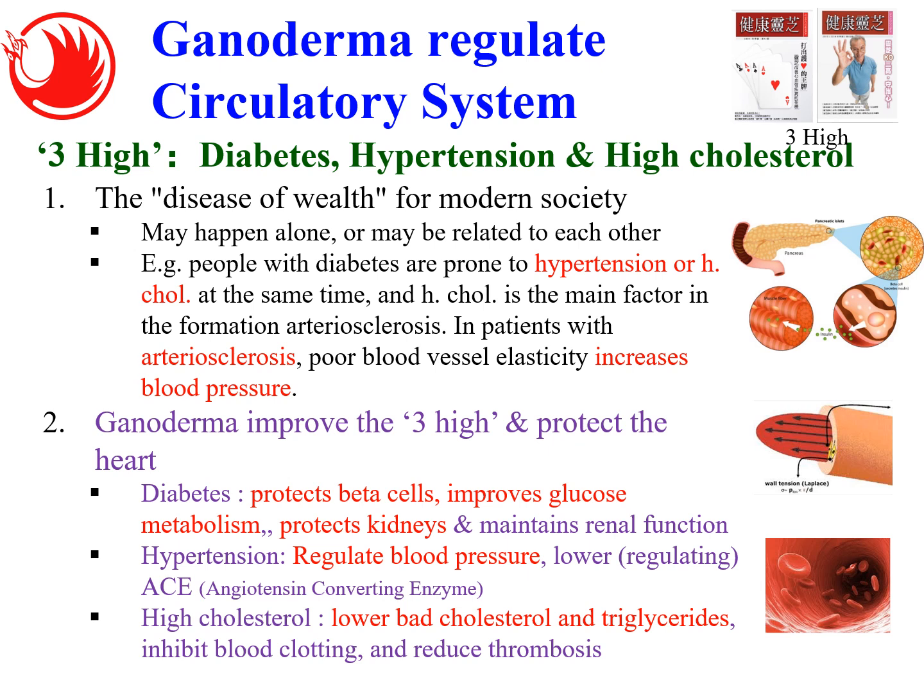Number two: Ganoderma regulates the regulatory system — what we call the three highs: high blood sugar (anti-diabetic), high cholesterol (lipid regulation), and hypertension. These three highs are diseases of the wealth of modern society and may happen together, creating a high risk of heart attack and even stroke. Ganoderma can improve the three highs and protect the heart. For diabetes, Ganoderma can protect beta cells, improve glucose metabolism, and protect the kidney and maintain renal function. For hypertension, Ganoderma is very good at regulating blood pressure. For high cholesterol, Ganoderma is proven to lower bad cholesterol and triglycerides. Ganoderma is proven to help prevent the three highs.